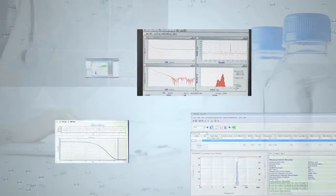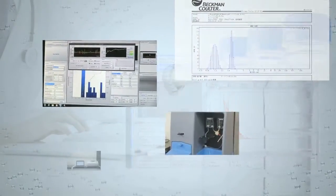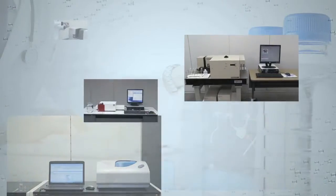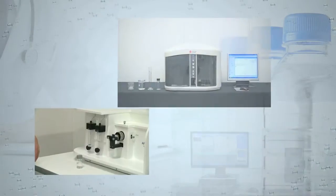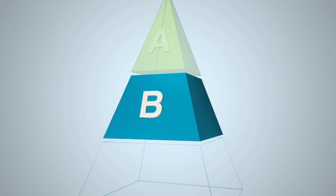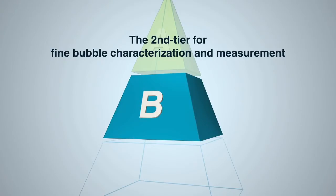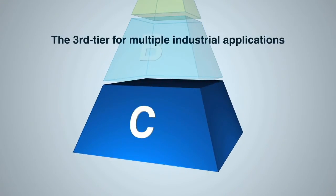Although significant progress has been made developing ultrafine bubble measurement and generation technologies, and their use in various applications has already begun, the terminology and definitions of fine bubbles and ultrafine bubbles have not yet been clearly established. In this regard, a three-layer system of standards is being considered, with general principles and terminology standards as first-tier standards A, fine bubble characteristics and measurement as a second-tier group of standards B, and specific industrial applications as the third-tier group of standards C.